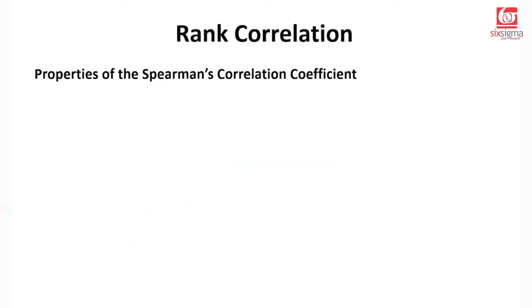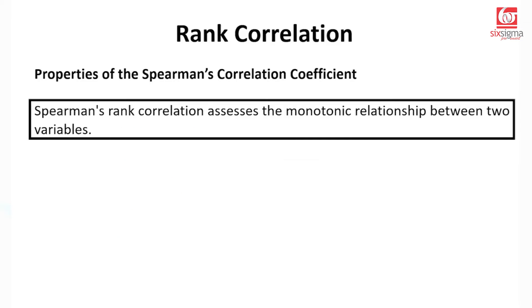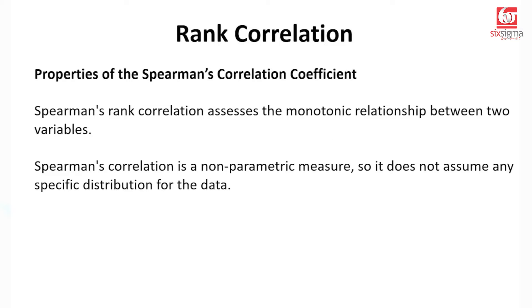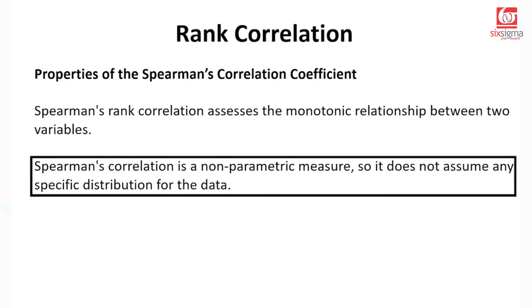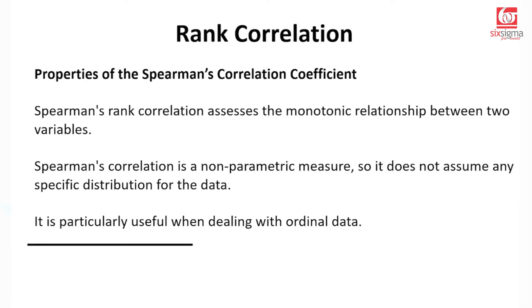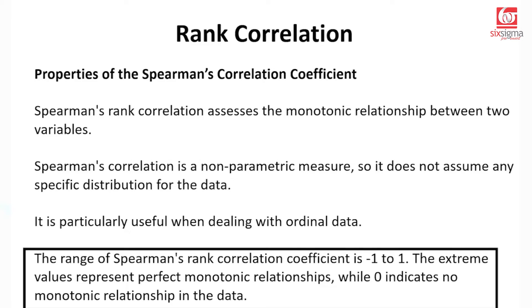Let's quickly talk about the properties of Spearman's correlation coefficient. It tries to assess the monotonic relationship between the two variables. It's a non-parametric measure, which means it does not assume any specific distribution like a normal distribution for the data. It's particularly useful when you're dealing with ordinal data. And the range of Spearman's rank correlation is from -1 to 1. The extreme values represent perfect monotonic relationship, while 0 indicates no monotonic relationship in the data.